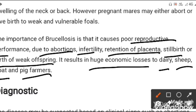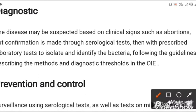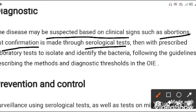For diagnosis, the main screening test is the milk ring test, and other biochemical tests may also be used. Disease may be suspected based on clinical signs such as abortion, but confirmation is made through serological tests and prescribed laboratory tests to isolate and identify the bacteria.